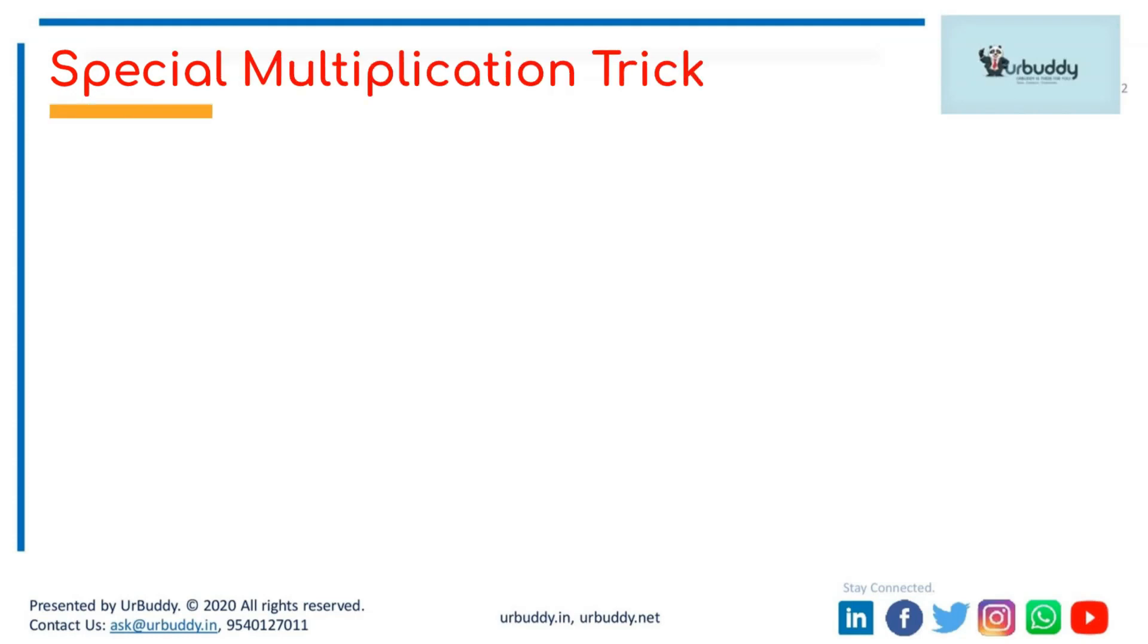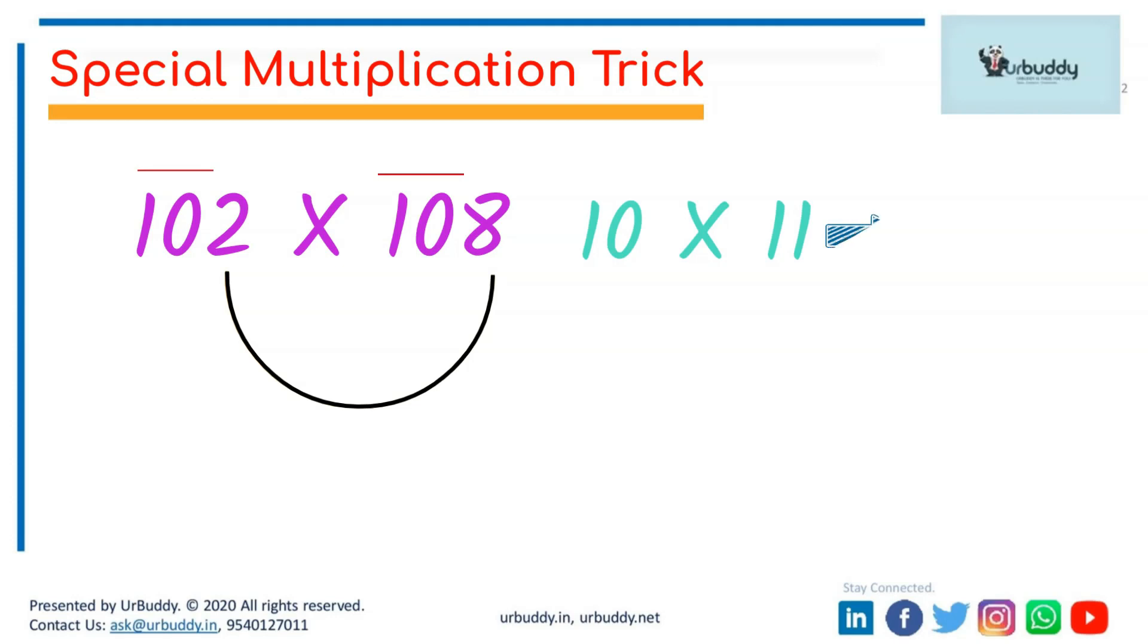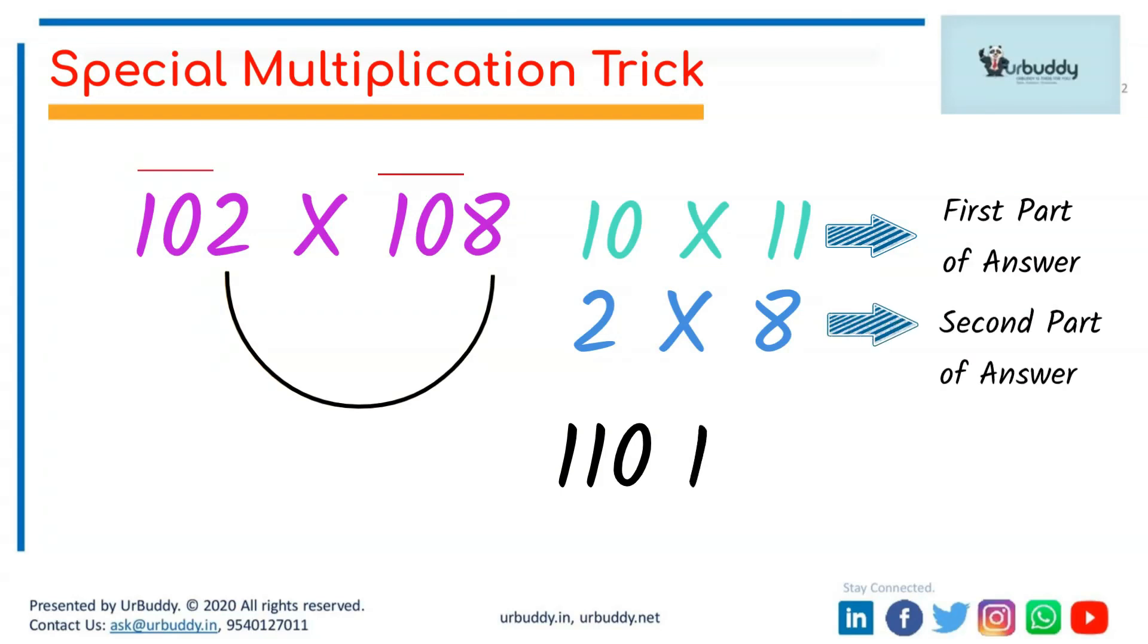Now if we have to multiply 102 by 108, then we observe that 10 is common in both the numbers, and 2 and 8 add up to 10. So we simply multiply 10 by its successor 11 to get the first part of the answer, which is 110. And to get the second part of the answer, we simply multiply 2 by 8, which is 16. And the answer of 102 multiplied by 108 is 11016. That's it, it's that easy guys.